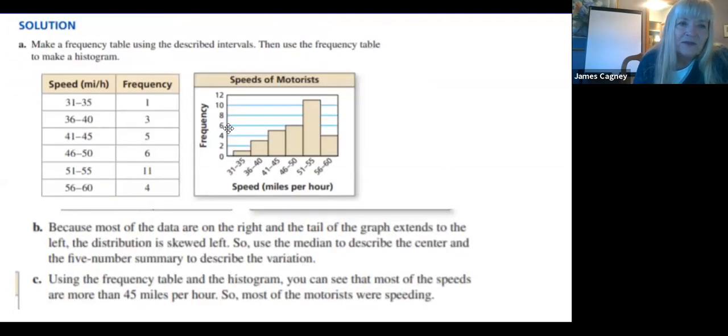Here's the solution for this. My intervals are 31-35, 36-40, 41-45, etc. Here is the histogram for this. Notice if I fold this in half, the halves are not going to meet. So it is not symmetric. Most of the data is over here on the right and the tail is going off to the left. So it is skewed left. When I have a skewed data set, I'm going to describe the center by the median. So the median is my measure of center and the five-number summary will tell me about the variation. I can see that most of the speeds are more than 45 miles per hour. So most of the motorists were indeed speeding.